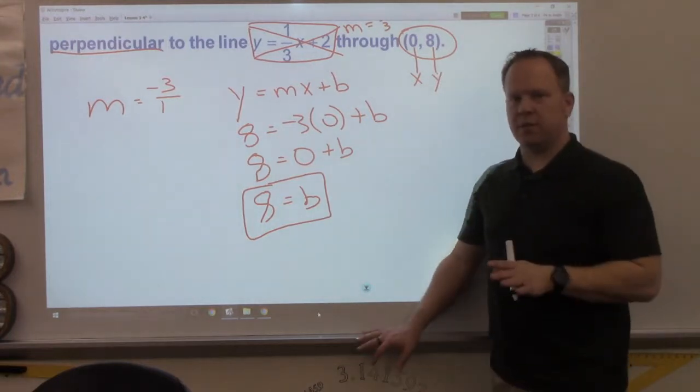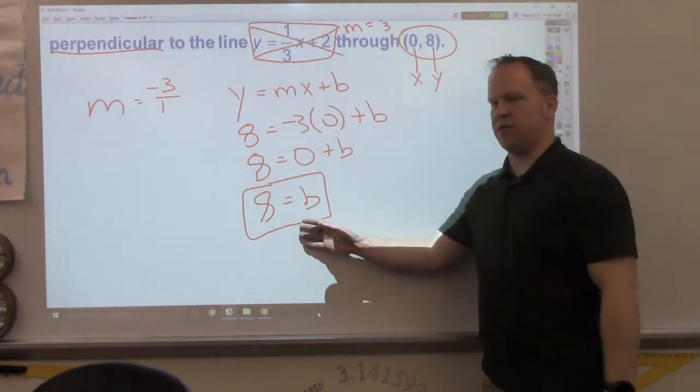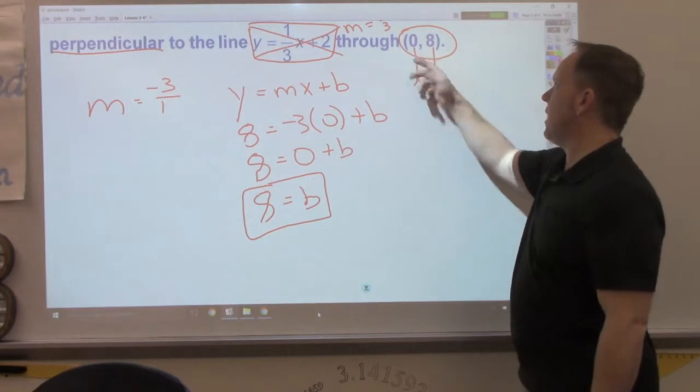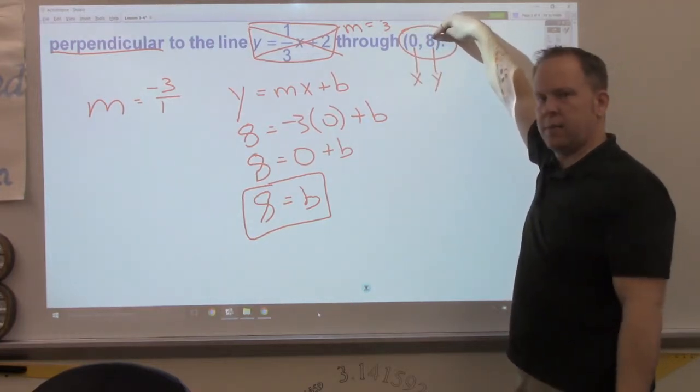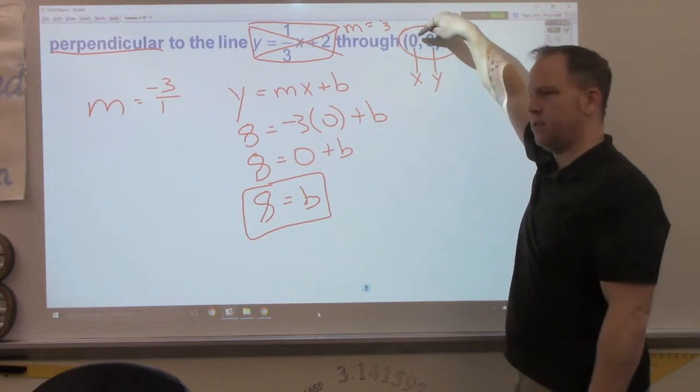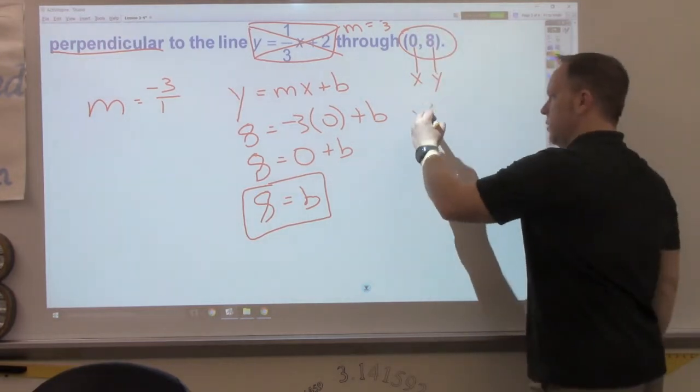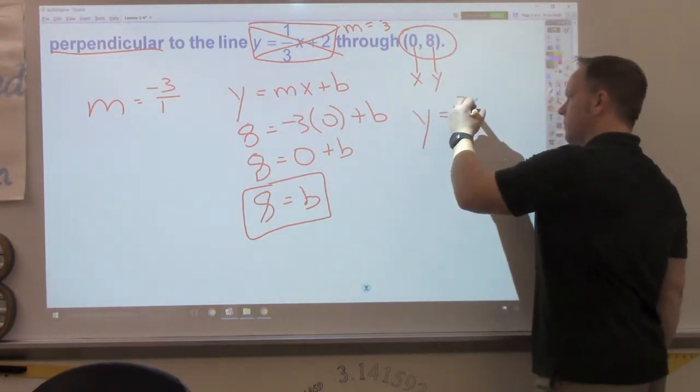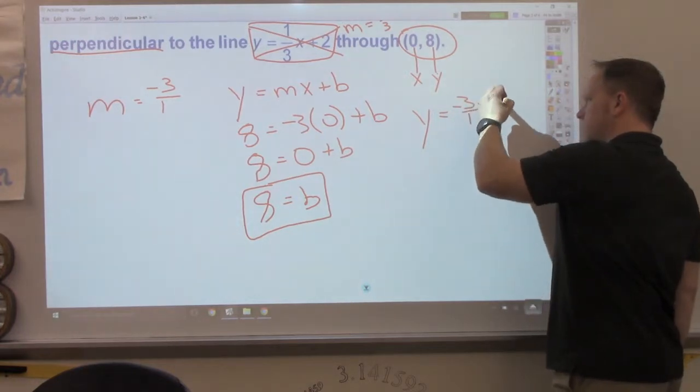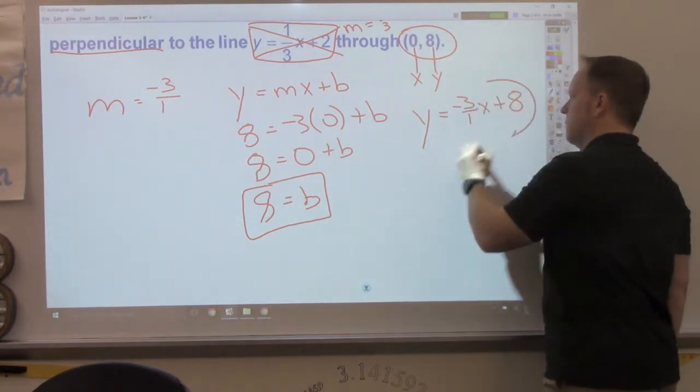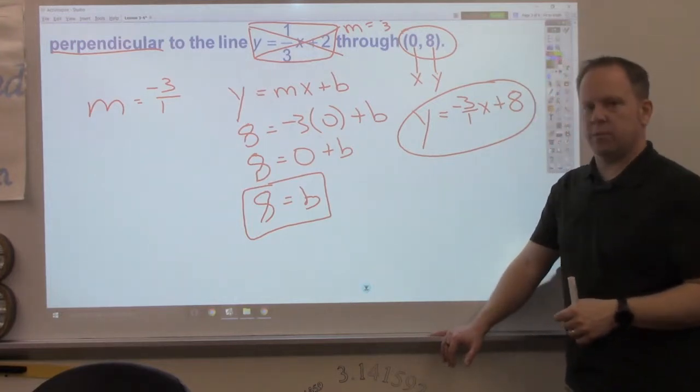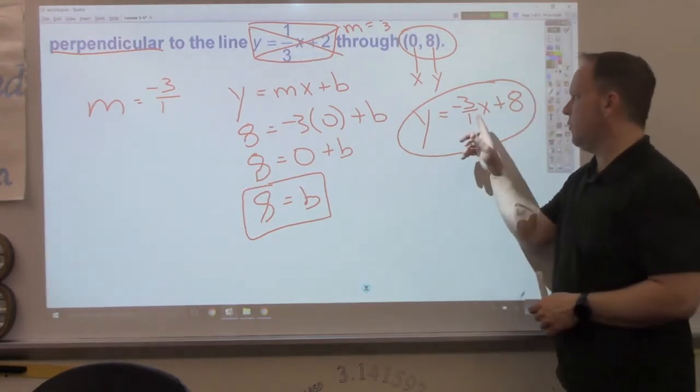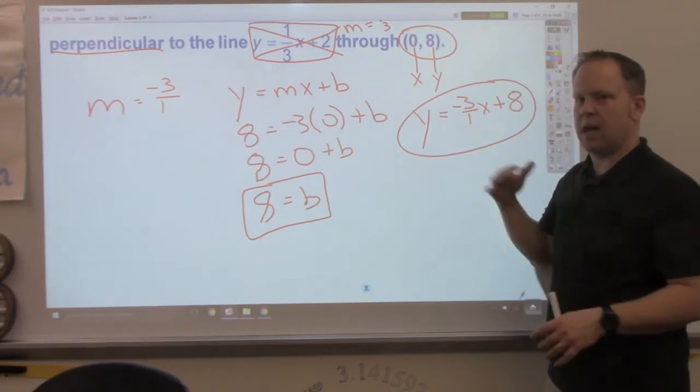Now, if you're paying attention, folks, technically we didn't even have to solve for b. If your point has a 0 for x, that means this is your y-intercept. But that only works if your x is 0. So, my final answer, y equals negative 3 over 1x plus 8. Again, if you just have negative 3 here, that's fine. I like the ratios.